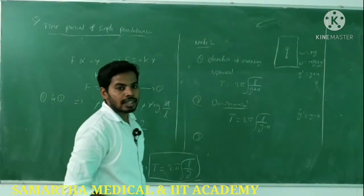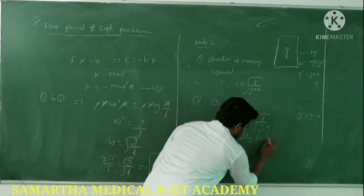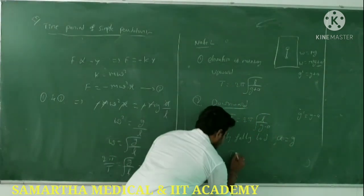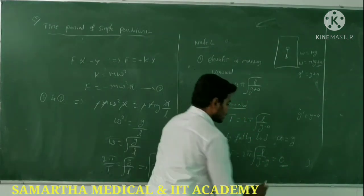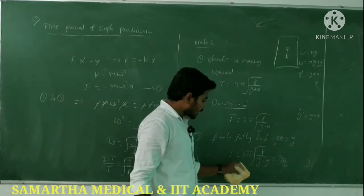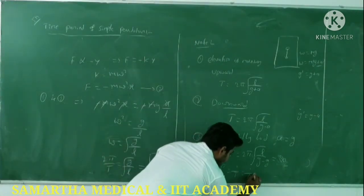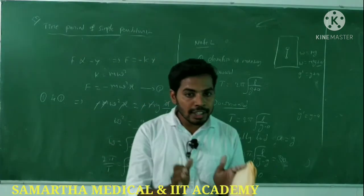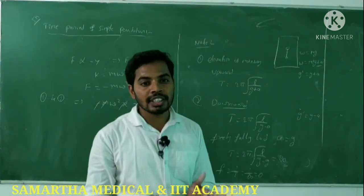Third case: freely falling body, where the acceleration equals g. Then g - g = 0, so T = 2π√(L/0) = infinity. The frequency F = 1/T = 1/infinity = 0. That means there are no oscillations in a freely falling body — on a freely falling body, the simple pendulum does not oscillate.